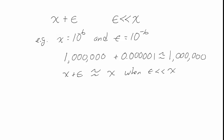Whenever we add a small quantity to a large quantity — or subtract — those are the cases where we can make approximations. On the other hand, if we multiply a small number and a big number together, for instance 10 to the sixth times 10 to the minus sixth equals 1, that's not approximately equal to x or epsilon. Similarly, if we divide them, it's not roughly x or epsilon. So only when we add numbers together can we really try to approximate things.